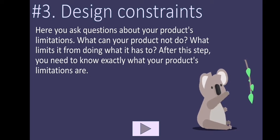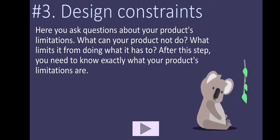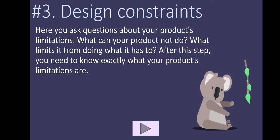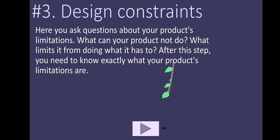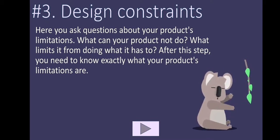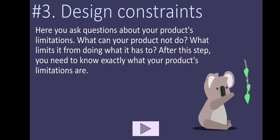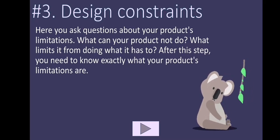Next, design constraints. This is where you look at what your product cannot do. So when you ask questions, for example, can my product be moved? It's too heavy, no it cannot move. My product cannot stand in the rain because it will rust, etc. Anything that your product does not or cannot do, anything that constrains your product, this is what you write down here. At the end of step two and step three, you must know what your product can and cannot do.